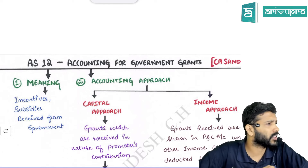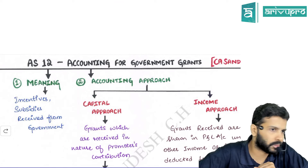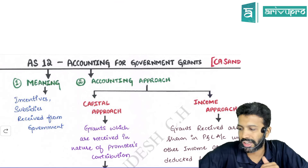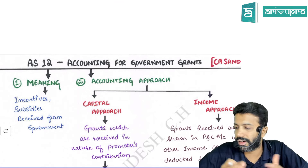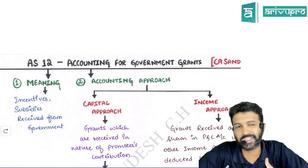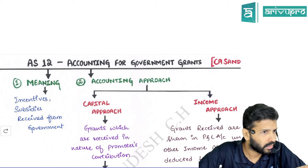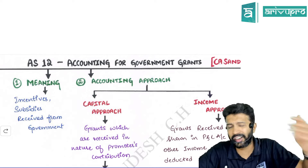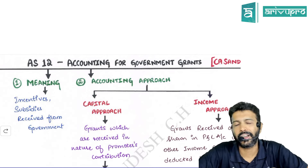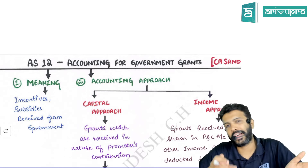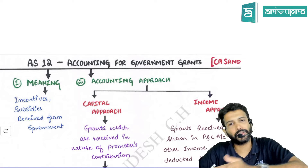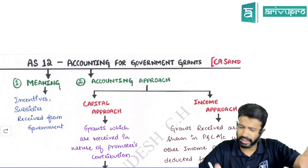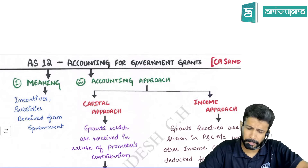These days the government is promoting MSME sectors — medium scale enterprises. Whoever is in that sector is getting some extra incentives, meaning they are getting loans at lower rates and extra benefits. So it is possible that the government will have many incentives and you will fall under them.